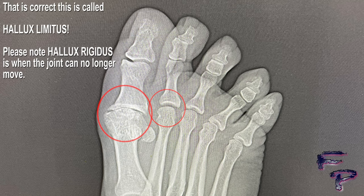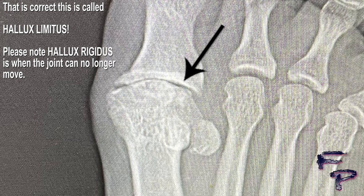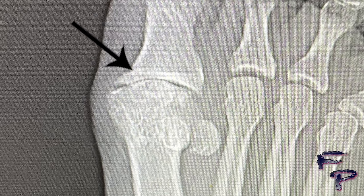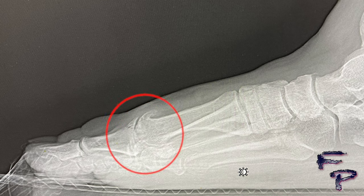On the big toe joint, there is very minimal space noted. Let's magnify this area. As you can see, there is pretty much bone rubbing on bone — there is no significant thick dark line as noted on the lesser metatarsals. You can also notice that the second metatarsal is very round compared to the first, which is another radiographic sign of squaring of the first metatarsal, consistent with hallux limitus and hallux rigidus.